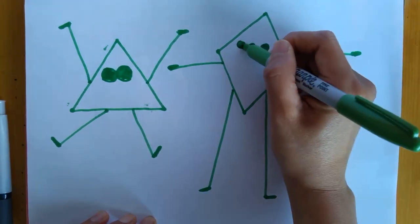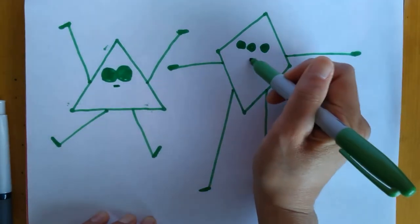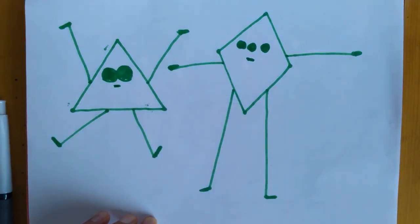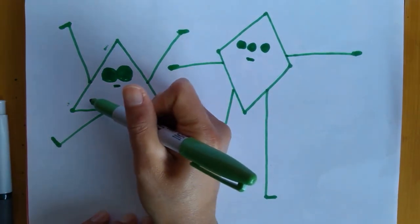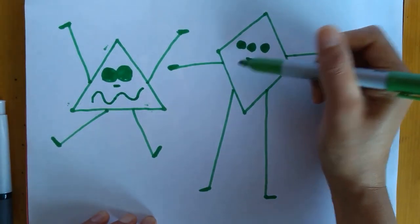Three eyes. Does he have a nose? Give him a little nose. And a mouth, maybe? All right. Let's draw a mouth.